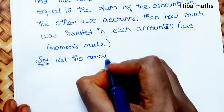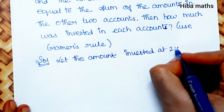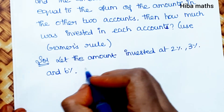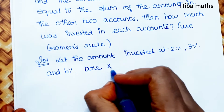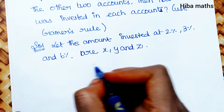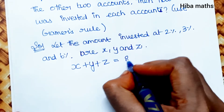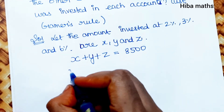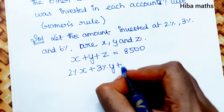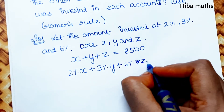Let the amounts invested at 2%, 3%, and 6% be x, y, and z respectively. The first equation: the total investment gives x plus y plus z equals 8500.